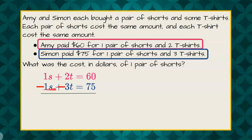When I do that, I want to do opposite, opposite, opposite. So 1s subtract 1s creates a zero pair. 2t subtract 3t is negative t, and 60 subtract 75 is negative 15.